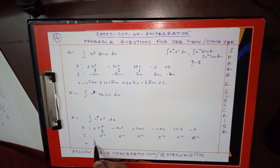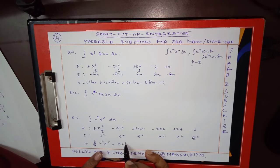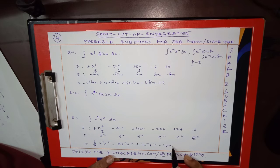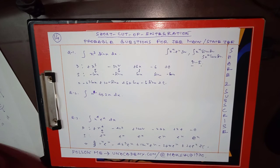So the result is x⁴ e^x minus 4x³ e^x plus 12x² e^x minus 24x e^x plus 24 e^x plus c. This is the type of integration.